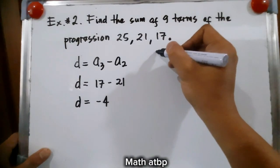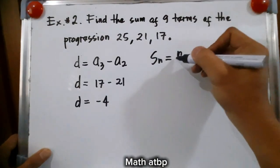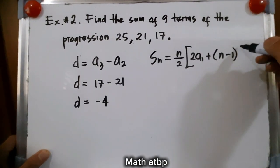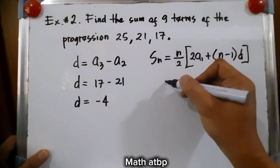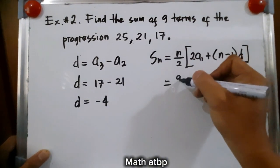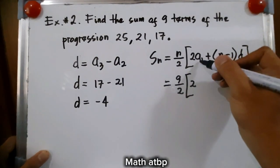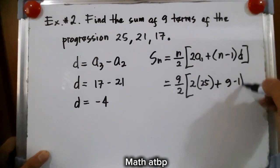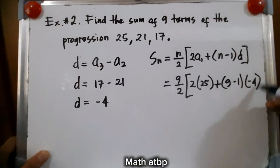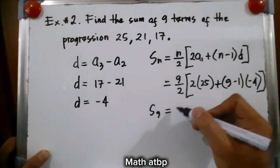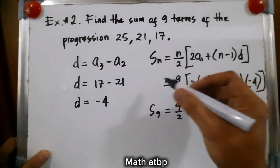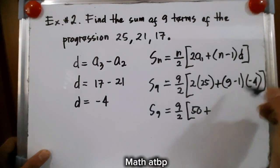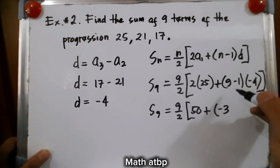Now, substituting that to our formula, s sub n, or the sum of n terms, is equal to n over 2 times 2a1 plus the quantity n minus 1 times d. So substitute: n over 2 is 9 over 2, times 2 and a1 is 25. So we have 9 over 2 times 2 times 25 plus n minus 1, which is 9 minus 1, times negative 4. That gives us 9 over 2 times 50 plus 8 times negative 4, and 8 times 4 is 32.